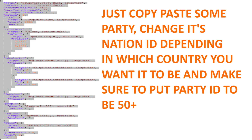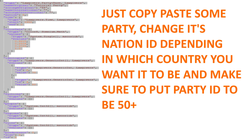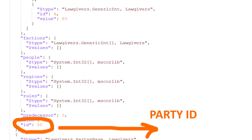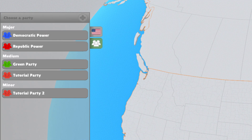Now I'm going to teach you how to create brand new parties. Just copy paste some party like I did. Make sure to change its nation ID depending on in which country you want the party to exist. And make sure to put the party ID to be 50 or more. After that you can change its name and ideology.